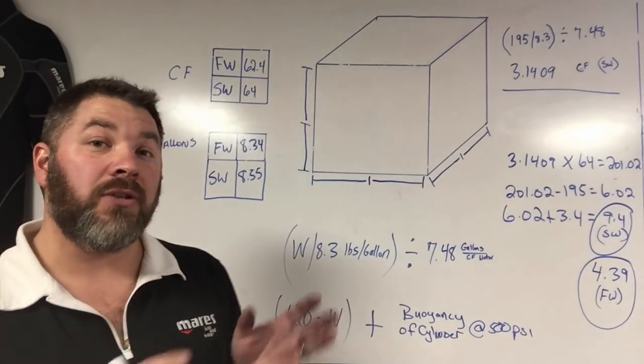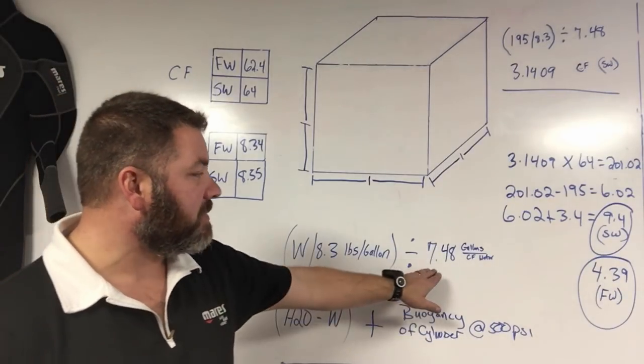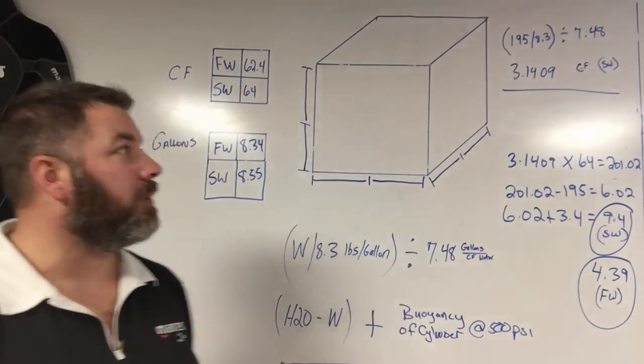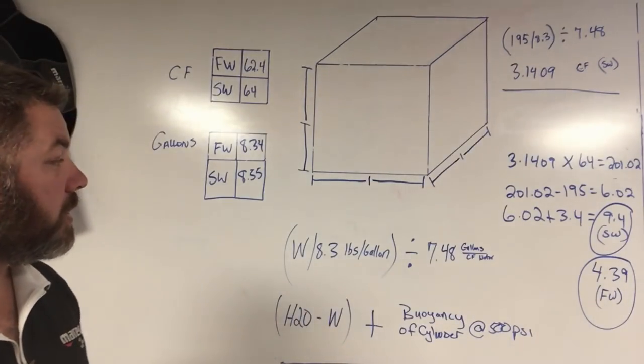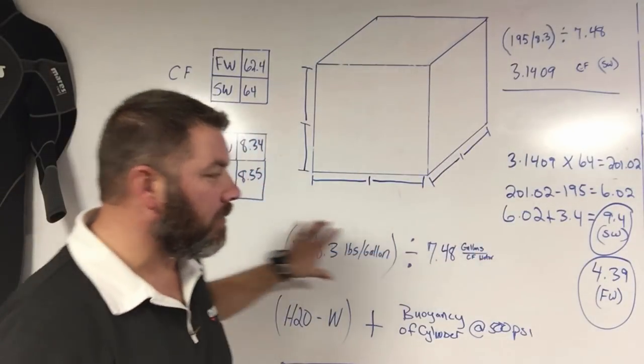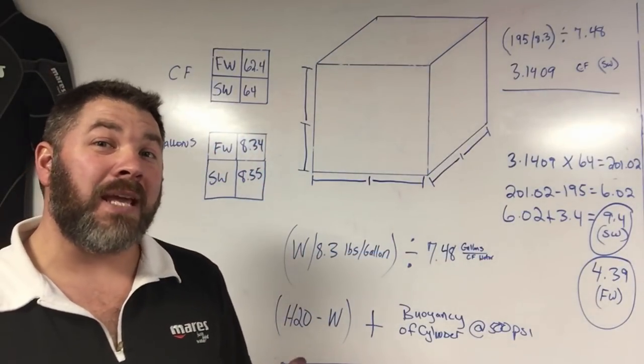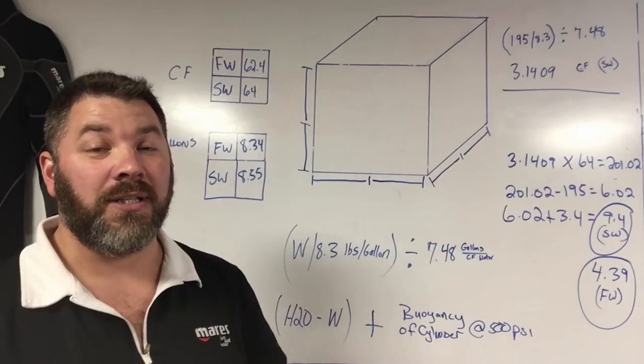I have to change that gallons over into cubic footage as well. So I'm simply going to divide that by 7.48, which is my conversion of gallons of H2O into cubic footage. So once I type in all that information, that's going to give me how much cubic feet I actually displace.